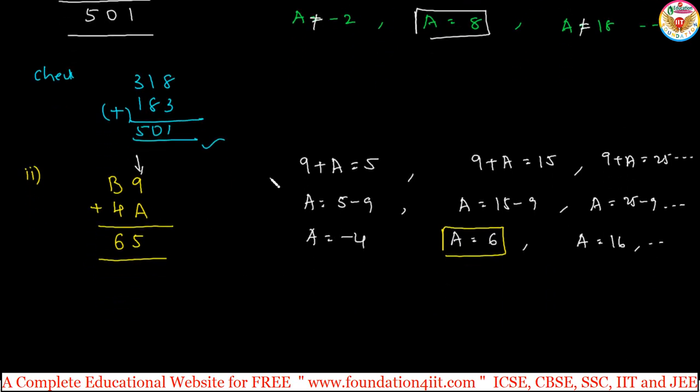A is equal to 6 only can satisfy this. The first statement is clear. Then if you replace, in the place of A if you take 6, 9 plus 6 is 15, so 1 carry over here. Now, 1 plus B plus 4 must be 6. Then next 1 plus B plus 4, it should be equal to 6 now.